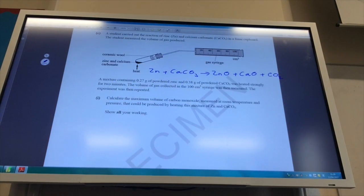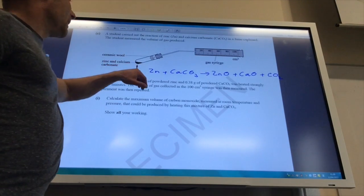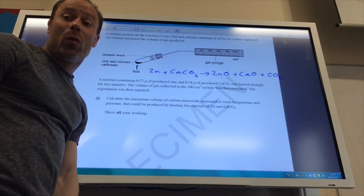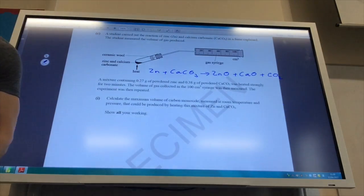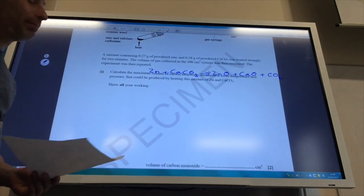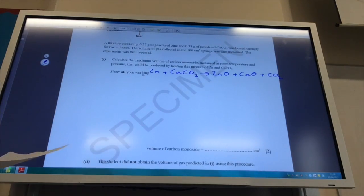Right, so they've given me the apparatus that they've done. That looks all okay. They've got the zinc and the calcium carbonate in their test tube. They're heating it nicely. They've got their gas syringe. Always happy. I'll just pop the equation up there to remind us. A mixture containing zinc and calcium carbonate is heated strongly. I collected the gas and I repeated the experiment. Calculate the maximum volume of carbon monoxide that could be produced measured at room temperature and pressure. Okay, so notice they've given me the mass of both reactants. So one of them looks like it's going to be in excess. So we need to work out the moles of both of these guys. So let's do that.